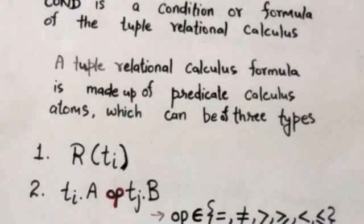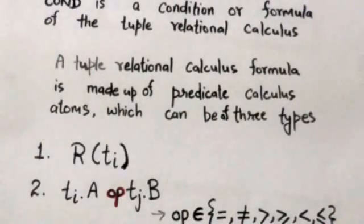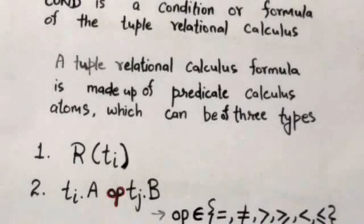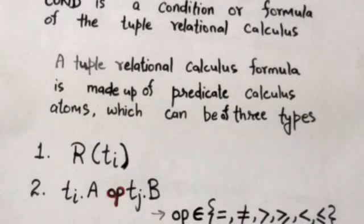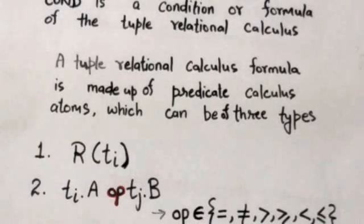The first type is an atom of the form r(ti), where ti is a tuple variable and r is a relation name. This atom specifies that tuple variable ti ranges over the relation whose name is r. If ti is a tuple in the relation r, then this atom evaluates to true, otherwise false.